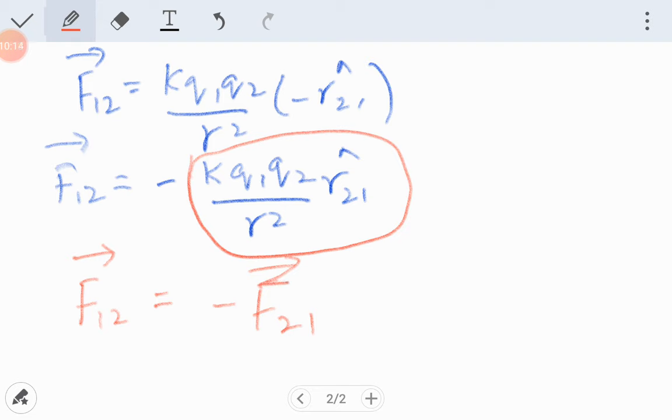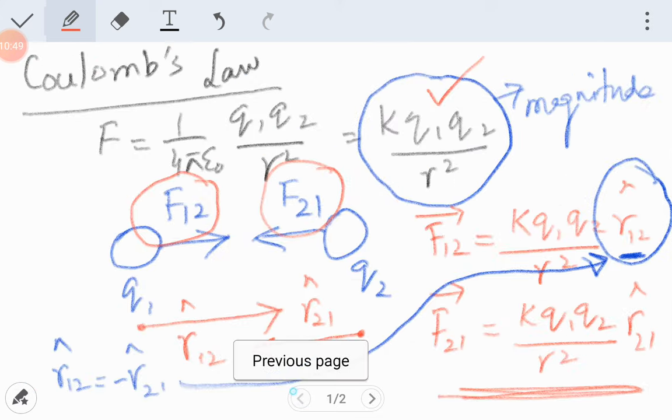So now I come to a conclusion after this derivation: that both the forces are action and reaction pair. Both the forces are equal and opposite. For example, if you tie a rope with a wall and you pull the rope, there will be a force that you are applying on the wall by pulling the rope, and there is a force that the wall is applying on you, and both are equal and opposite. So this is an action and reaction pair. We have reached a very useful conclusion that the electrostatic force between two charges is an action and reaction pair.